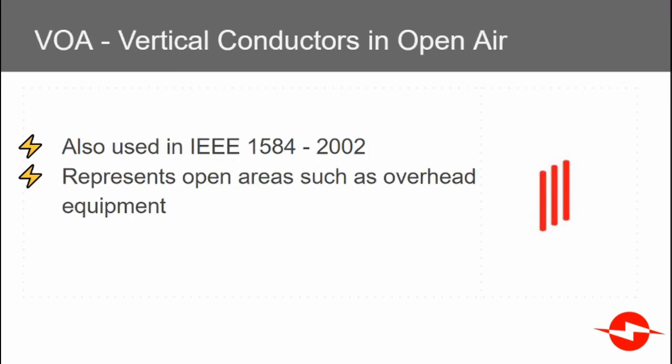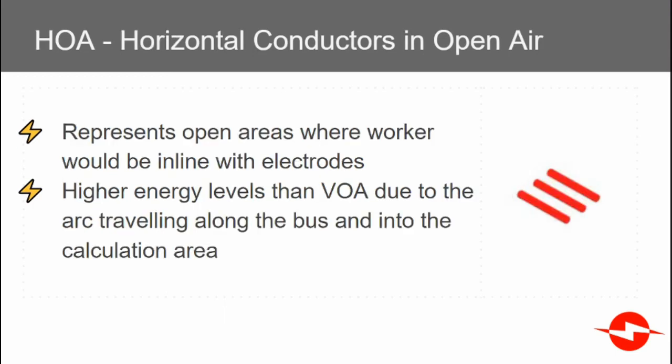The vertical conductors in open air configuration was also used in the previous version of 1584. This represents general equipment overhead in open air. The final configuration is horizontal conductors in open air. This represents open areas where workers would be in line with the horizontal electrodes.